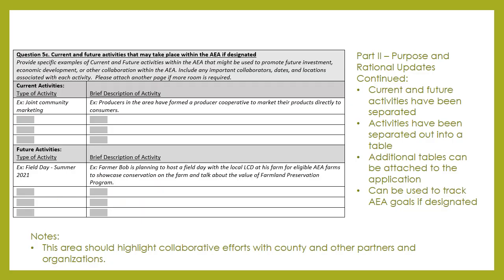Continuing with our updates to Part 2, Purpose and Rationale, we have updated our layout to separate out current and future activities from a narrative format into a table to identify individual events and activities. This table can be used as a way to track goals and programs during the petition process and afterwards if the AEA is designated. This also serves to highlight the collaborative efforts between petitioners, local governments, and other partners. Additional tables can be attached to the application as needed.